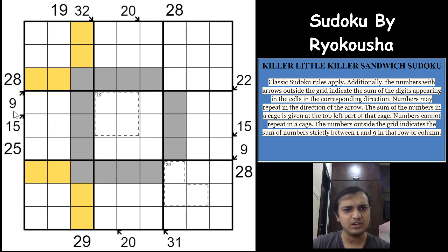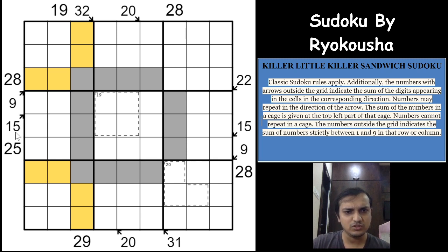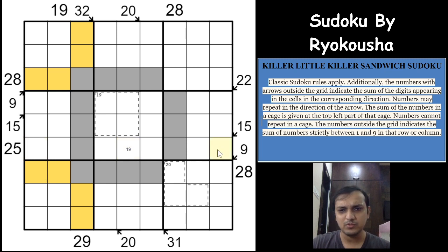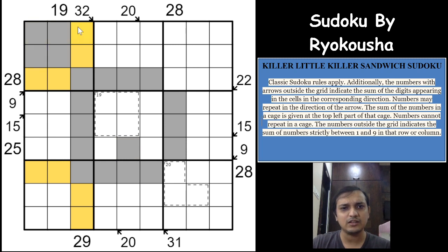Looking at the 25 sandwich clue: the minimum number of cells needed between 1 and 9 to achieve a sum of 25 is 4. If 1 or 9 appears too early in the row, the remaining cells are insufficient. This forces both 1 and 9 to be in specific positions — all four middle cells of the 25 row cannot be 1 or 9, confirming that 1 and 9 are placed at the extreme positions.